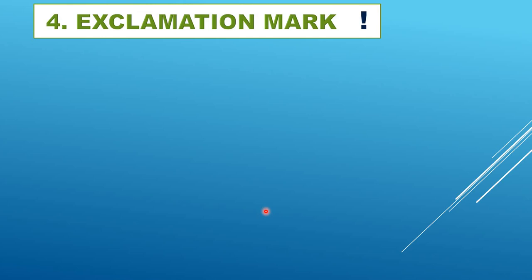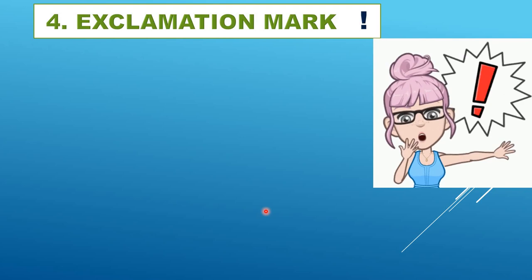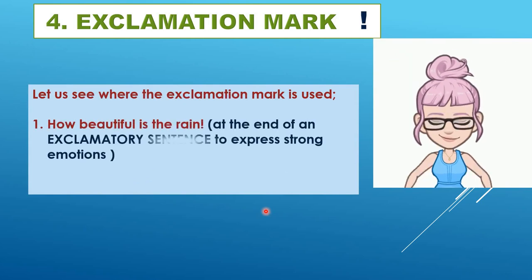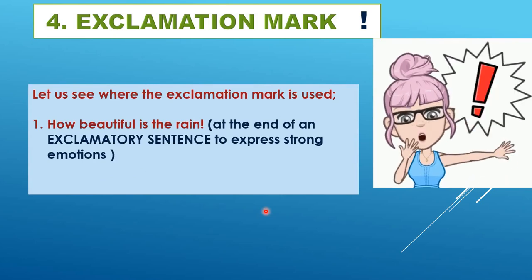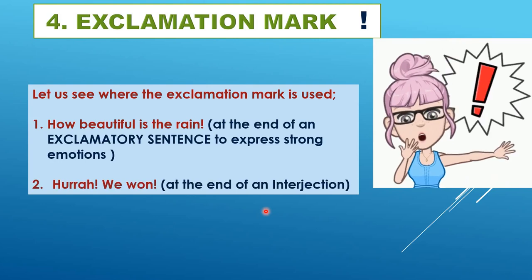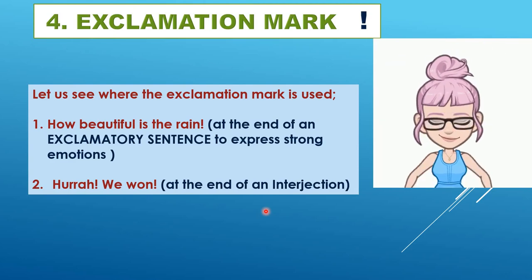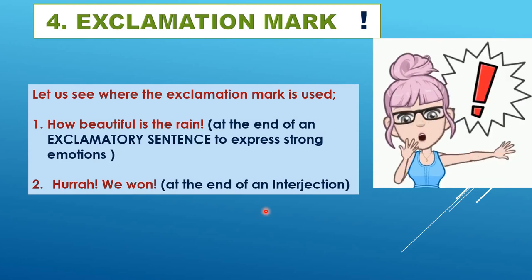The exclamation mark is used only in exclamatory sentences — not in declarative or imperative sentences. It expresses sudden emotions. For example: 'How beautiful is the rain!' It is also used at the end of interjections — words that express emotions like 'Hurrah,' 'Bravo,' 'Alas,' and 'Oh.' These are the places where exclamation marks are used.